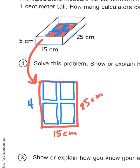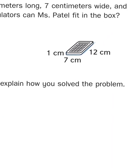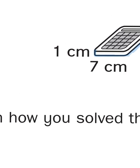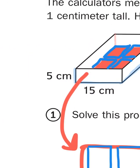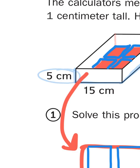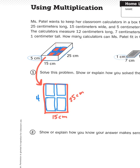Now the calculators are a centimeter tall. One centimeter. That's important to know. And our box is five centimeters tall. So that means I could stack five layers of calculators because each calculator is a fifth of the height of the box.